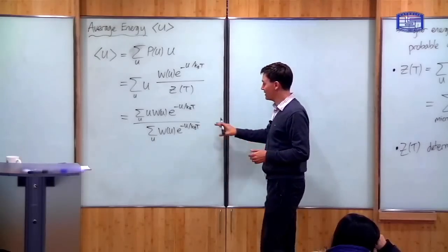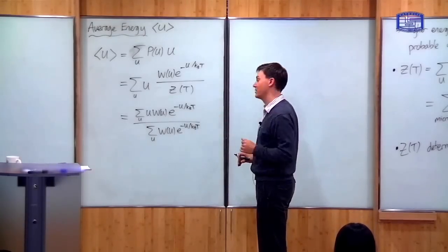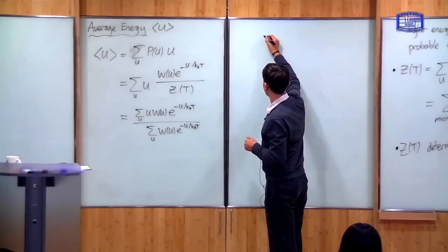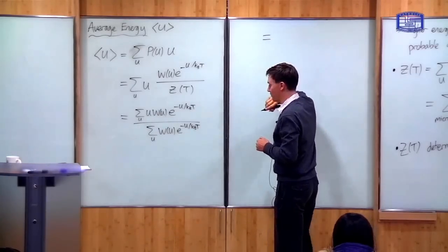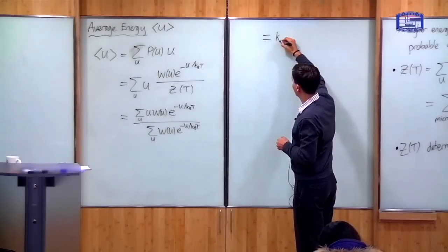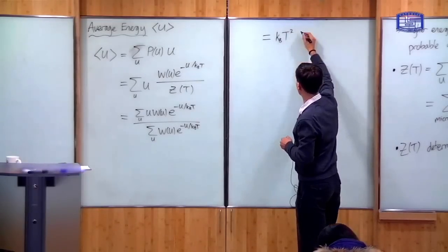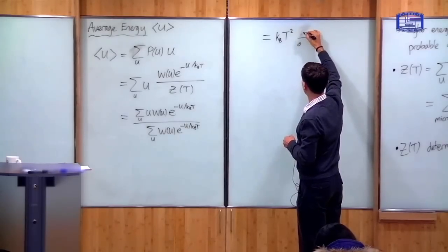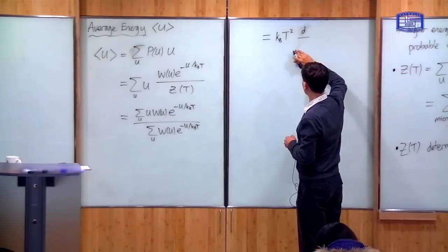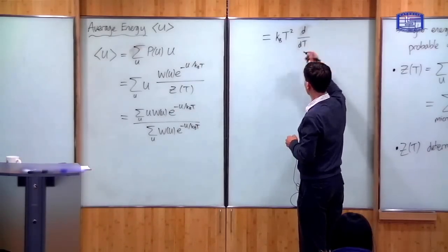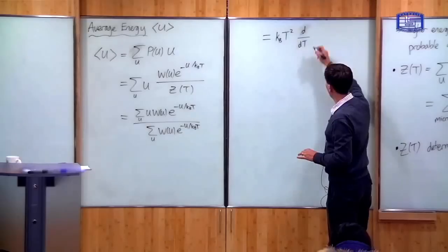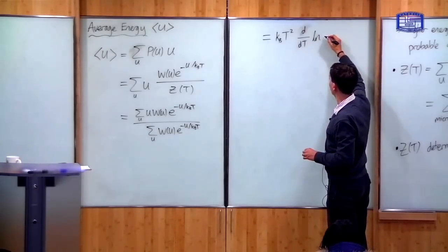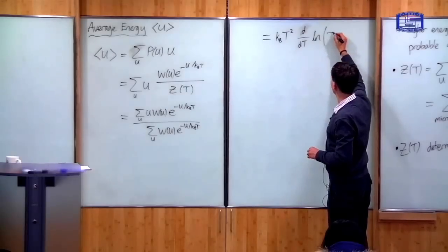And you see this is interesting. The top and the bottom look virtually the same in this equation. The only difference is there's an extra U on the top which is not on the bottom. So this is not simply an identity. But we can write this down simply in terms of the partition function. In particular, this is equal to — I'll explain why in a moment — k_B T squared times the derivative d/dT of the log of this sum.